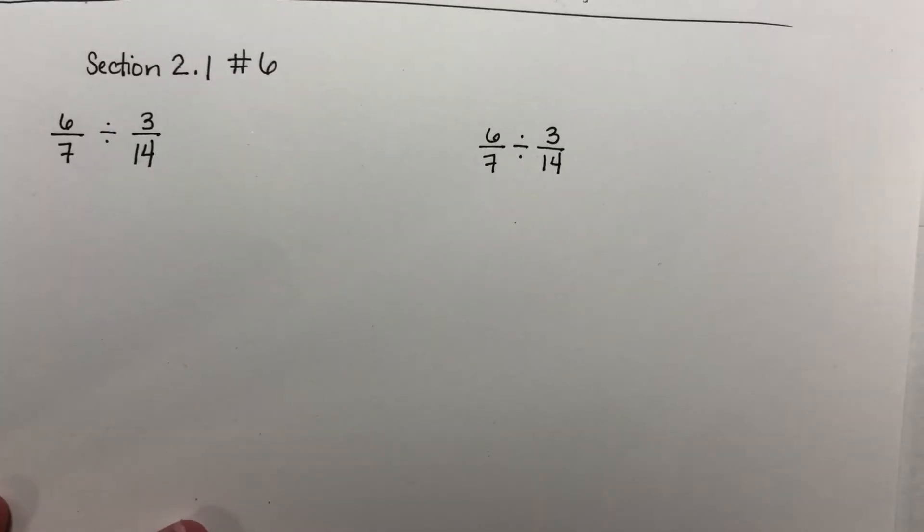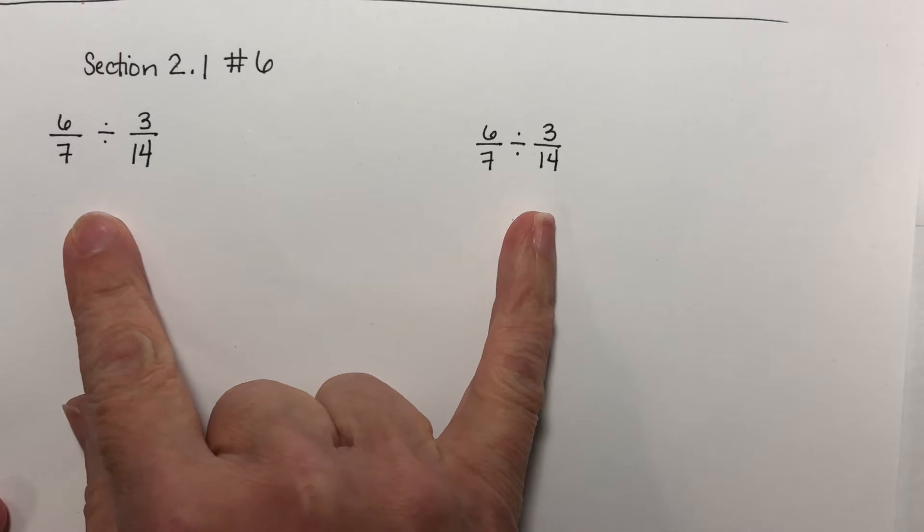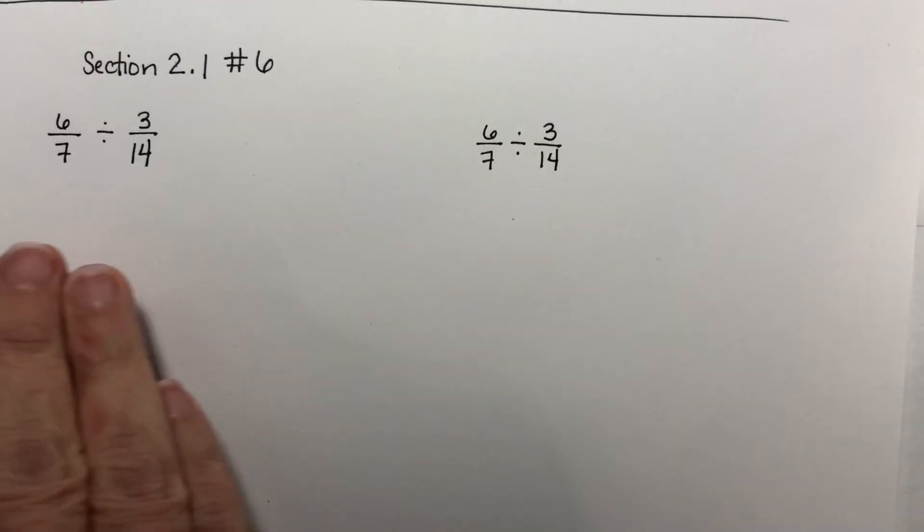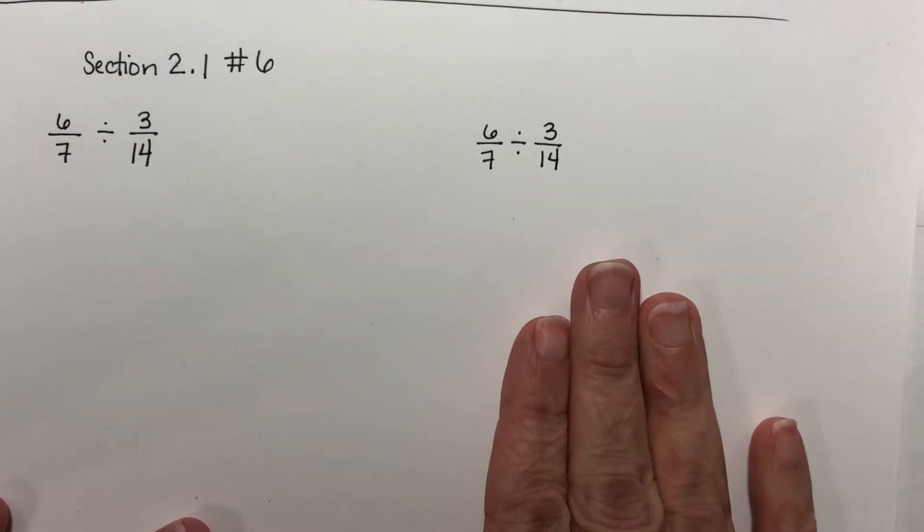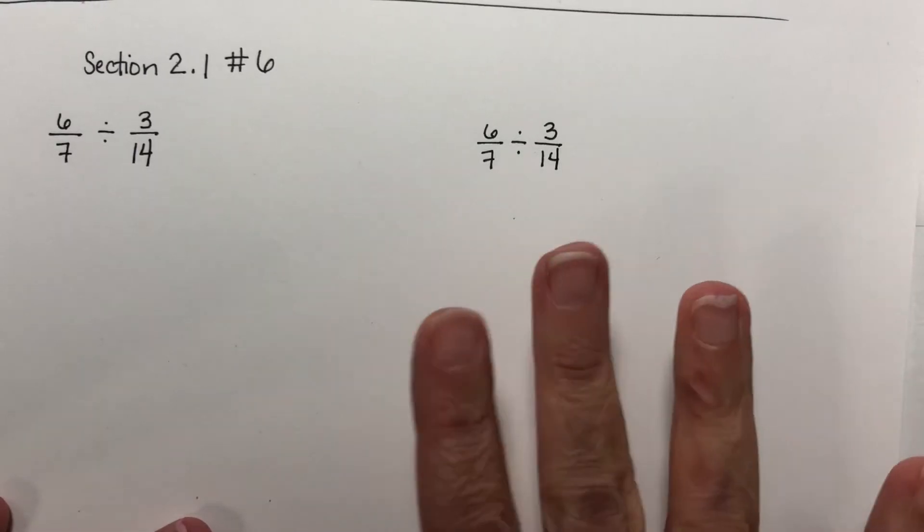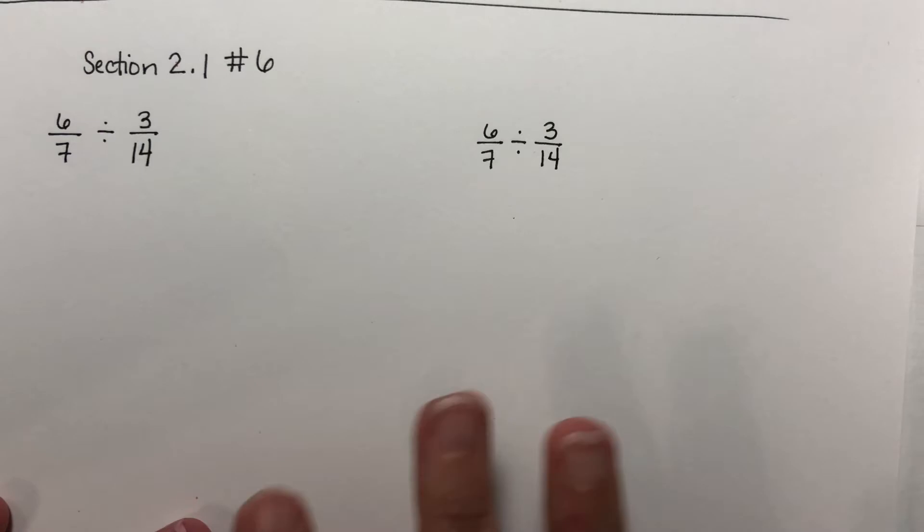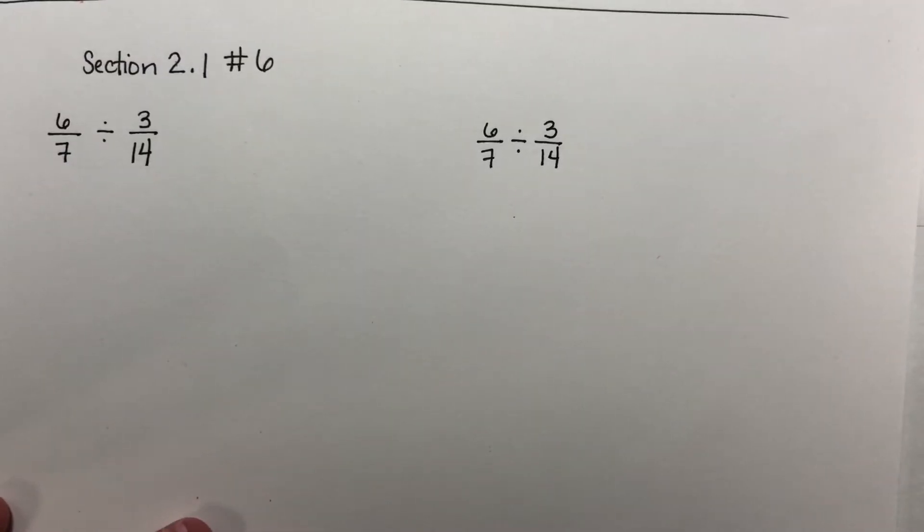This is problem number six from the section 2.1 homework. Again, I'm going to work it twice. Once the way that's probably easiest, and once the way that they're showing you in view and example and help me solve this. This is going to happen occasionally where we do different methods. Don't let that panic you. If you have questions about it, just contact me and I'll make sure to make it clear like I'm about to do now.